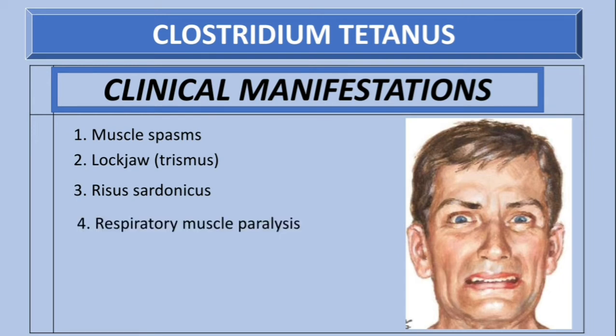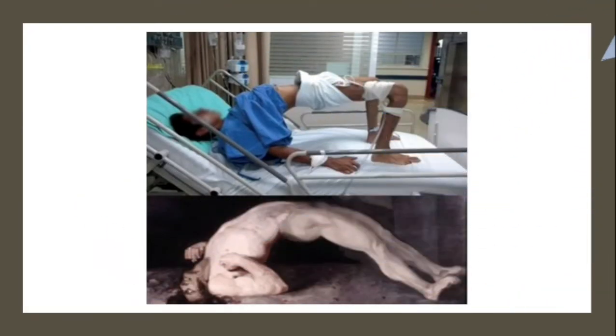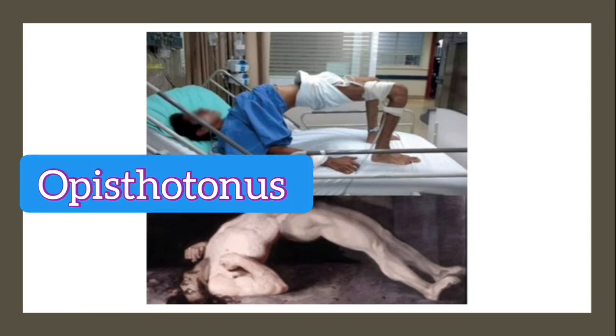There is also respiratory muscle paralysis. In Clostridium botulinum there is no contraction of the respiratory muscles at all, whereas in Clostridium tetani there is increased or sustained muscle contraction. Back muscles also contract, causing opisthotonus — a specific sign of tetanus visible in clinical images.